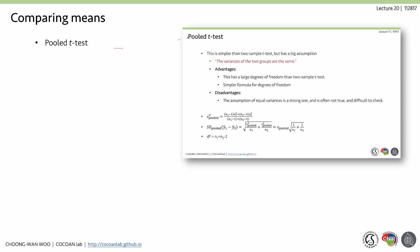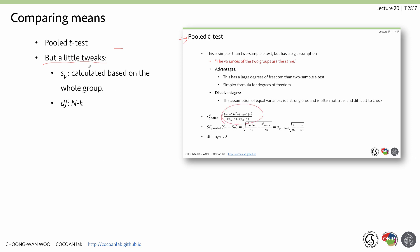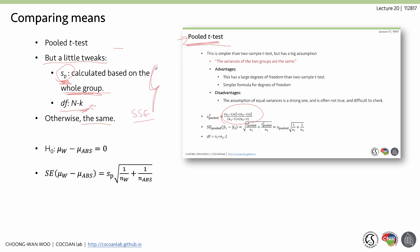ANOVA is an omnibus test similar to chi-square — it tells us whether any difference exists but not which specific groups differ. For that, we can use a pooled t-test. In this multi-group case, instead of using each group's standard deviation, we use the standard deviation calculated from the whole group (pooled), and the degrees of freedom become n − k because we have multiple groups.